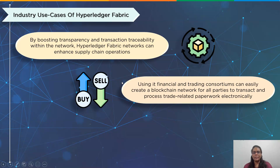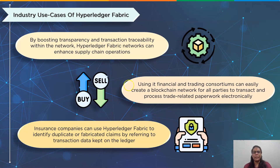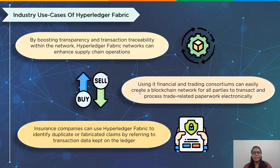The third use case is insurance. The insurance sector loses billions of dollars each year to fraud. Using Hyperledger Fabric, insurance companies can use transaction data stored on the ledger to spot duplicate and fabricated claims. By leveraging smart contracts to automate payments from the at-fault party back to the insurance company, blockchain can help speed up the processing of multi-party subrogation claims.